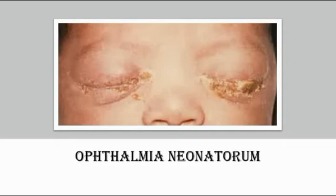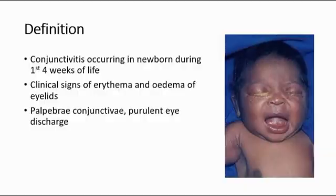In this video, I'm going to talk about Ophthalmia Neonatorum. The definition of Ophthalmia Neonatorum is it is a conjunctivitis that occurs in newborns during the first four weeks of life, with clinical signs of erythema and edema of the eyelids — redness and swelling of the eyelids. There will also be papebrae conjunctivae and purulent eye discharge, as shown in this picture.